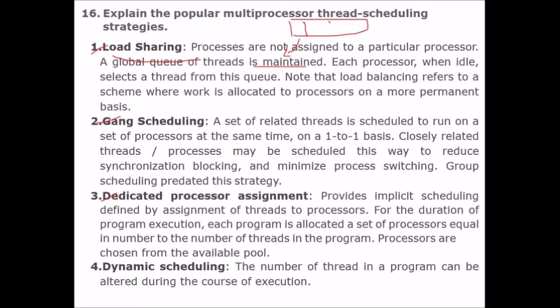Gang scheduling: a set of related threads is scheduled to run on a set of processors at the same time on a one-to-one basis. Closely related threads and processes may be scheduled this way to reduce synchronization overhead and minimize process switching.